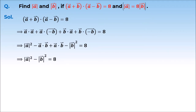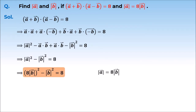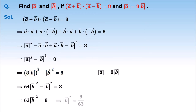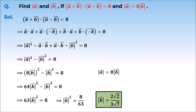We are given that magnitude of A vector is equal to 8 times magnitude of B vector. Substituting this in, and simplifying, magnitude of B vector squared is equal to 8 by 63. So magnitude of B vector is equal to 2 root 2 upon 3 root 7.